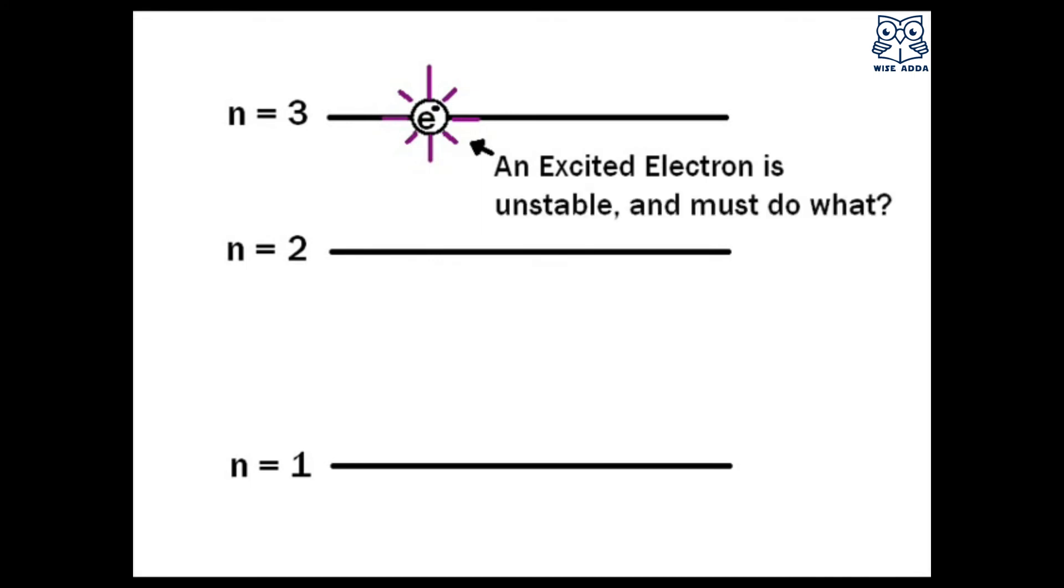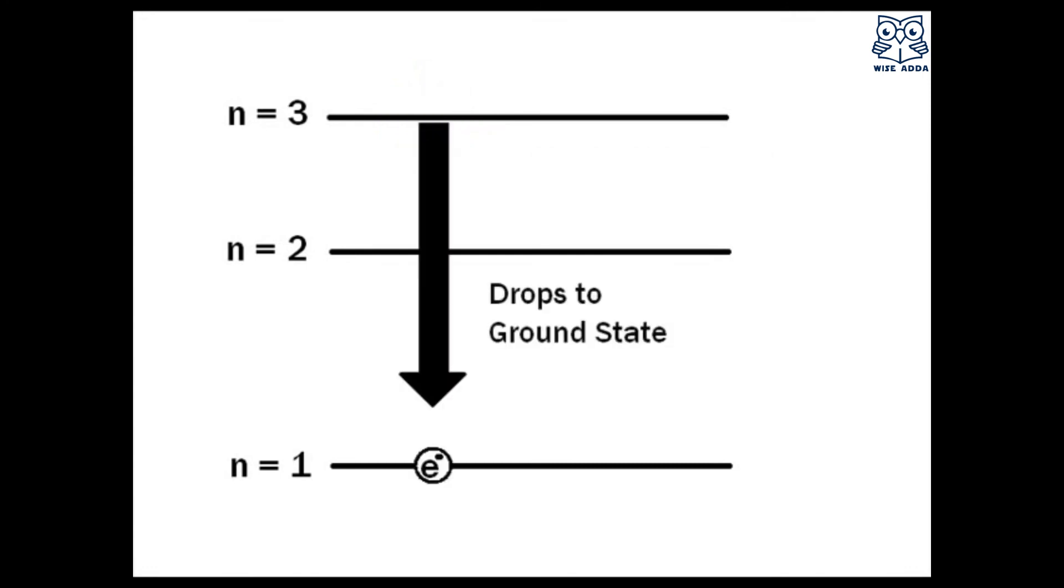And as we know, electrons get excited and they are very unstable. They release their energy and come back to the ground state and release photons in the form of light, and we see it through our eyes.